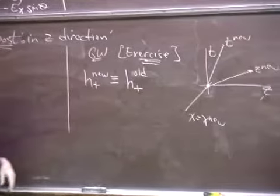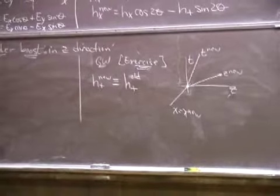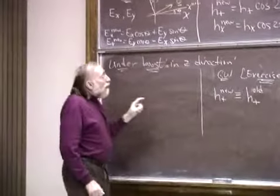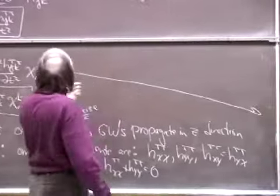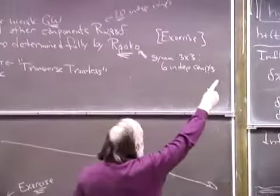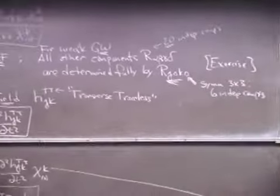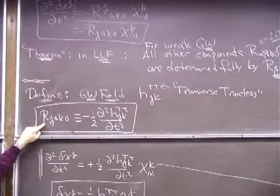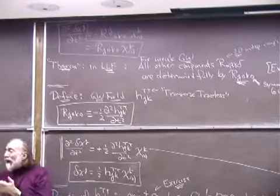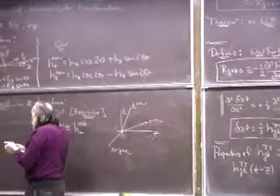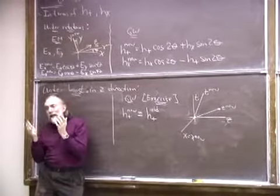So H plus doesn't change, by contrast with E plus which does change and is associated with the change of photon momentum. H plus is related to the Riemann tensor by a couple of time derivatives — it's H^TT_XX which is related to components of the Riemann tensor by a couple of time derivatives. So in fact the components of the Riemann tensor will change; it's just that we have found a particular mathematical way of describing the gravitational wave where we have identified a quantity that does not change under boosts. It's really a nice quantity to use.